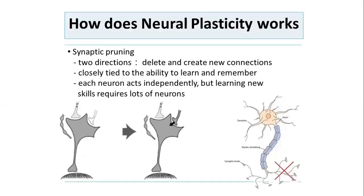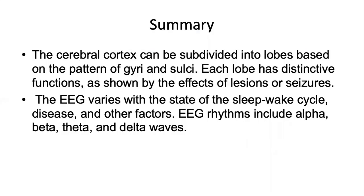During neural plasticity there is synaptic pruning — you can delete and create new connections. Neurons act independently, but learning new skills requires lots of neurons. It's very important during the early years to develop neural connections because the brain is still very receptive at that stage.